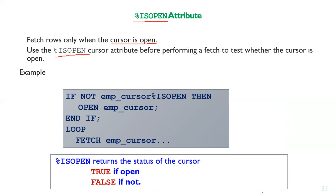Here is an example: if the employee cursor is not open, then open the employee cursor and fetch from it. The %ISOPEN attribute returns the status of the cursor — true means the particular cursor is open, and false means the cursor is not open.